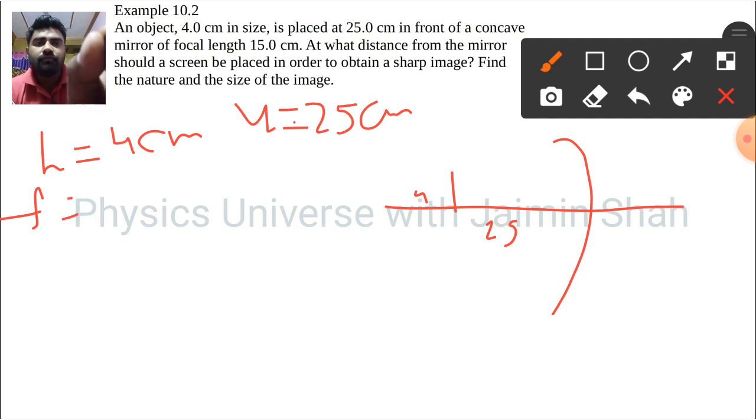The focal length f equals 15 centimeters. At what distance from the mirror should a screen be placed in order to obtain a sharp image? Find the nature and the size of the image.